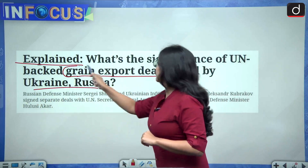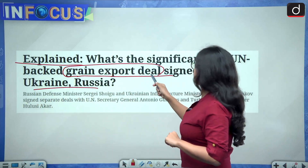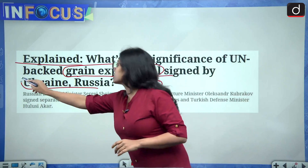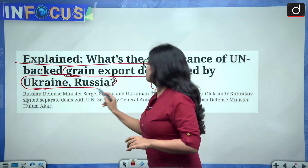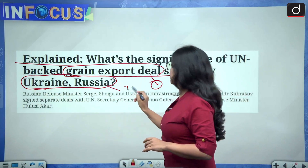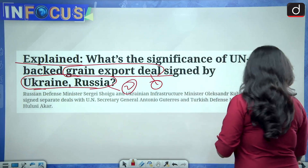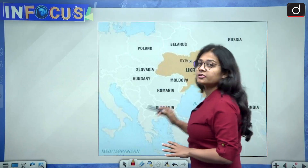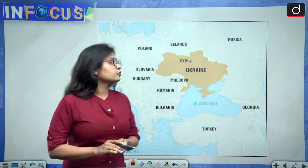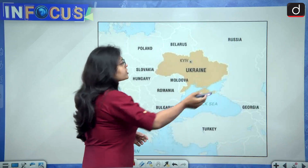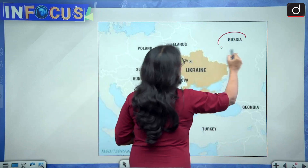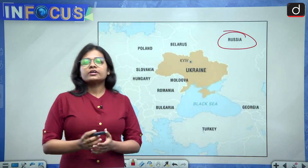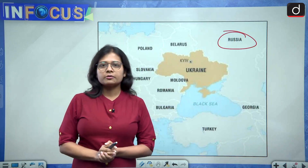First is the grain export deal and second is the Russia-Ukraine context. This is the map of Russia and Ukraine. I think people would be able to locate Russia in the world map — it is the biggest when it comes to land size.